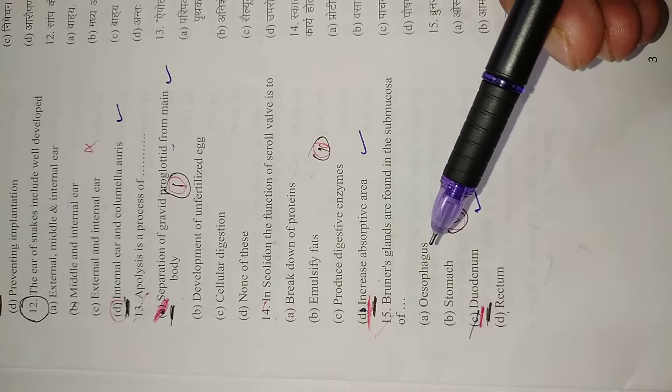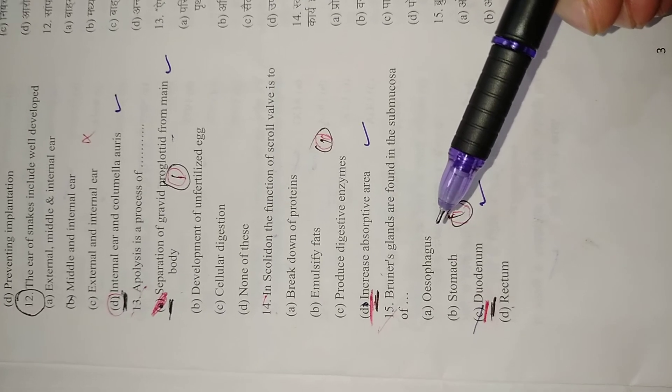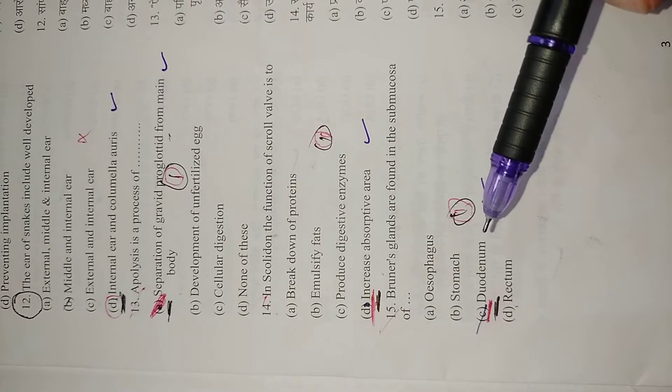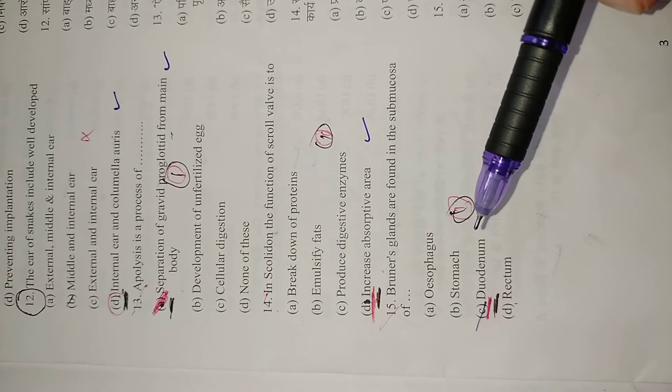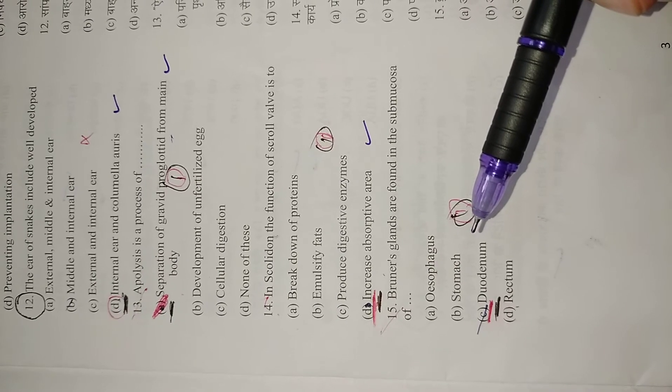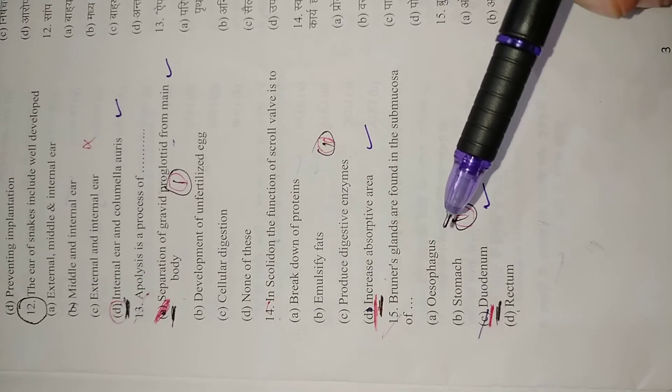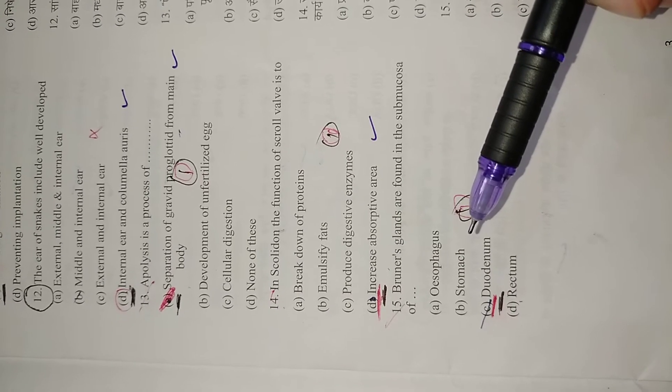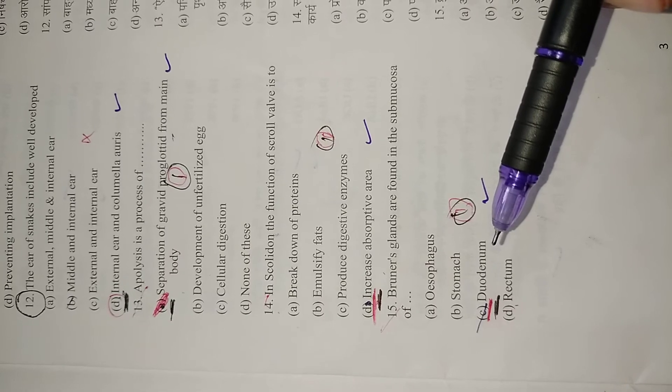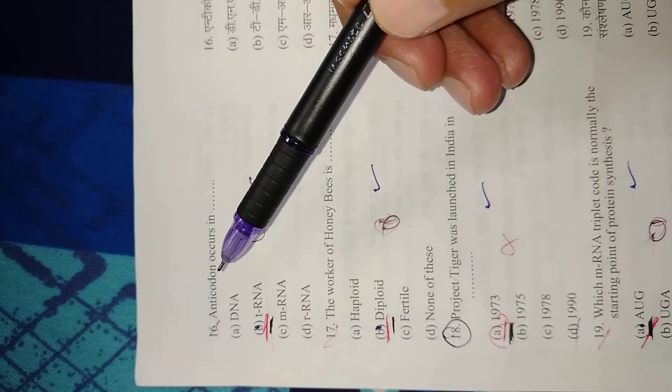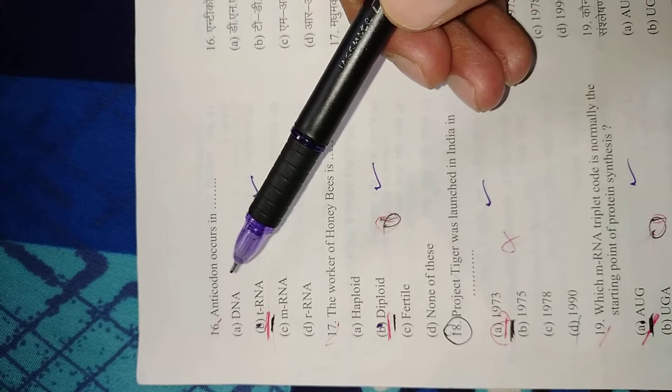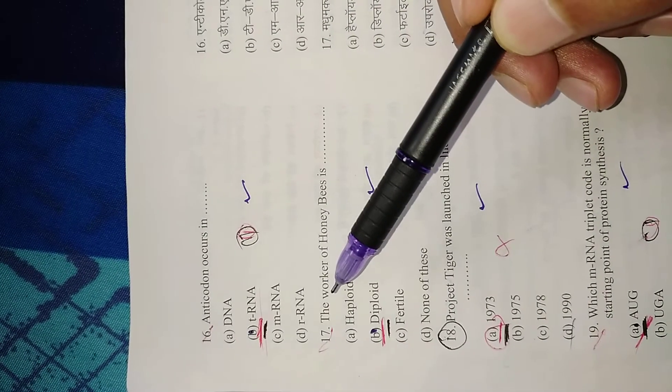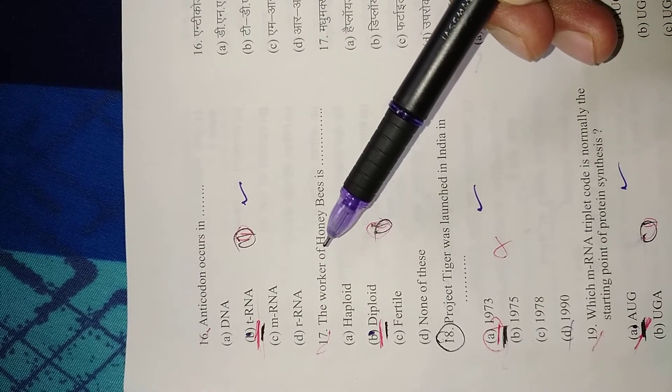These glands function to decrease the acidity of HCl and prevent the duodenum lining from HCl. Right option is C, duodenum. Question 16: Anticodons occur in tRNA. Right option is B, tRNA. Question 17: The worker honeybee is diploid. Right option is B, diploid.